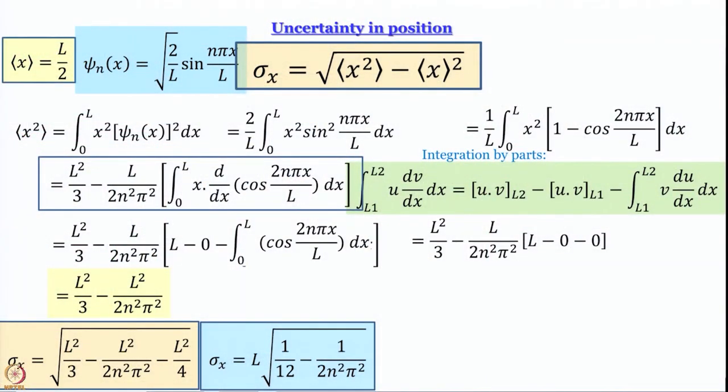The crux of the matter is we now have this expression for uncertainty in position. Let us now seek the expression for uncertainty in linear momentum, and that is going to be much easier than the uncertainty in position.